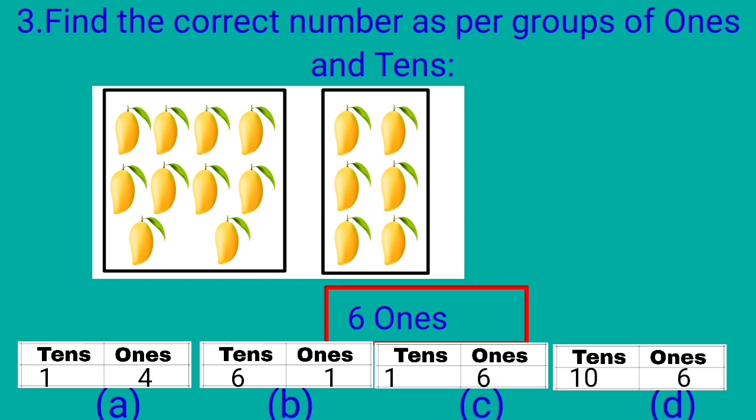Let's count the things in group at left side. 1, 2, 3, 4, 5, 6, 7, 8, 9, 10. Here is a group of 10 mangoes. That is 10 1s. We all know 10 1s is equal to 1 10s. So there is 1 10s at the left side. And there are 6 1s at the right side. So option C, 1 10s, 6 1s is the right option.